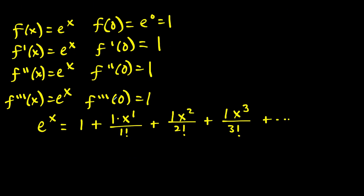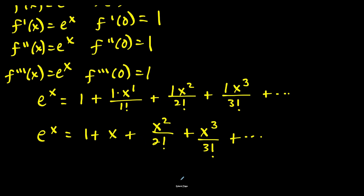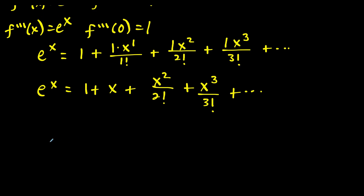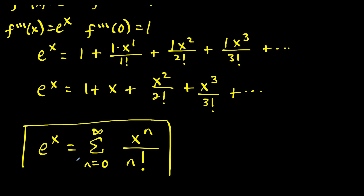Simplifying, this is equal to one plus x plus x squared over two factorial, plus x to the third over three factorial, and so on. Now we take this expanded form and write it as a condensed series. We have e to the x equals the sum from n equals zero to infinity of x to the n over n factorial. Notice the power of x matches the factorial underneath, and since this series is all positive — it doesn't alternate — we don't need a negative one to the n factor. This is the McLaurin series for e to the x.